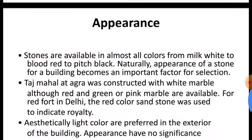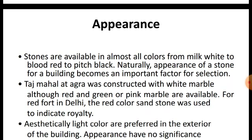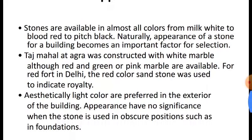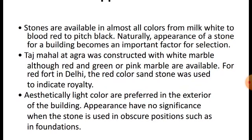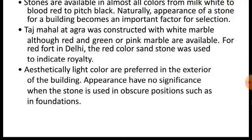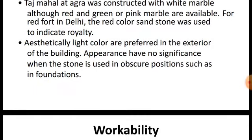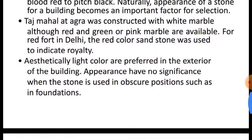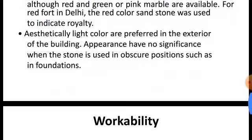Appearance of a stone is very important, especially for the exterior portion of a building. Stones are available in almost all colors, from milky white to pitch black. Appearance of a stone building becomes an important factor in the selection of stone. As an example, the Taj Mahal at Agra was constructed with white marble, although red, green, and pink marble are also available.